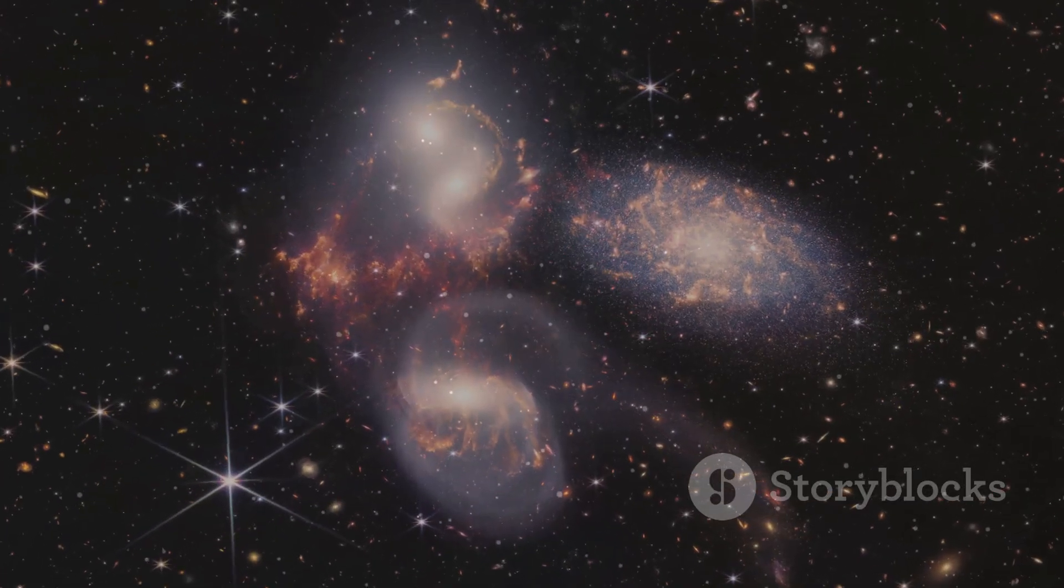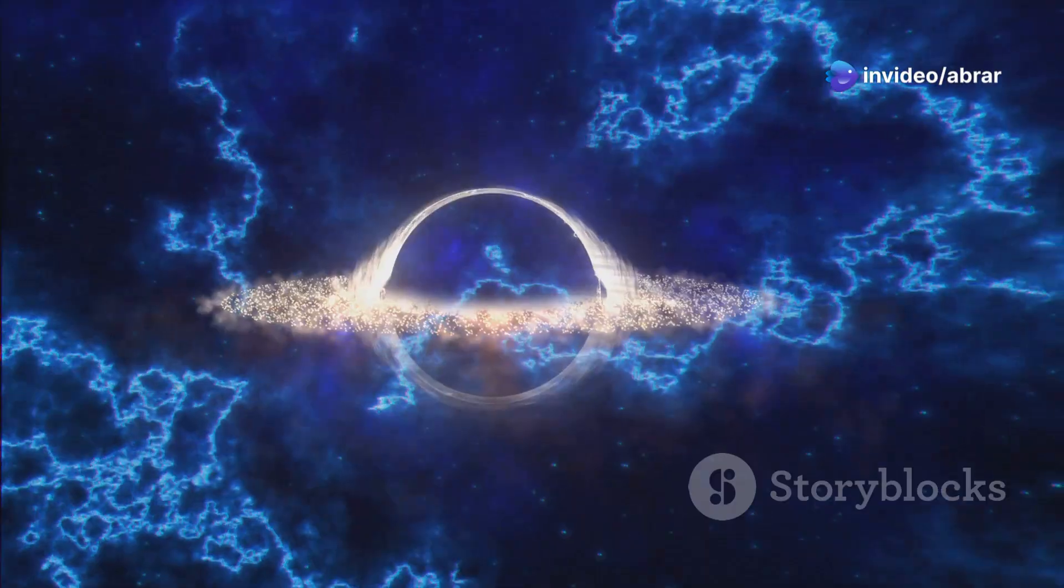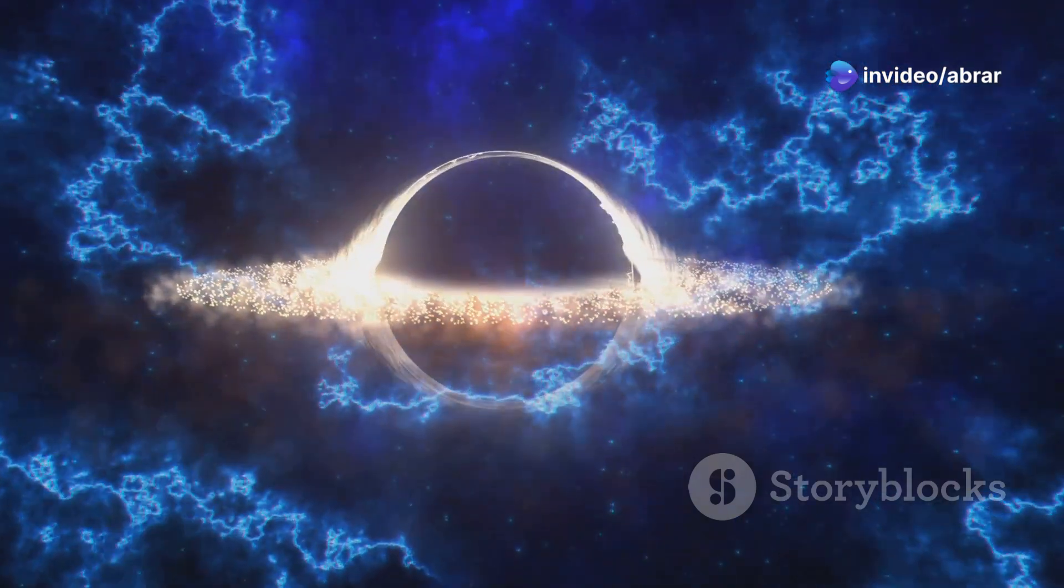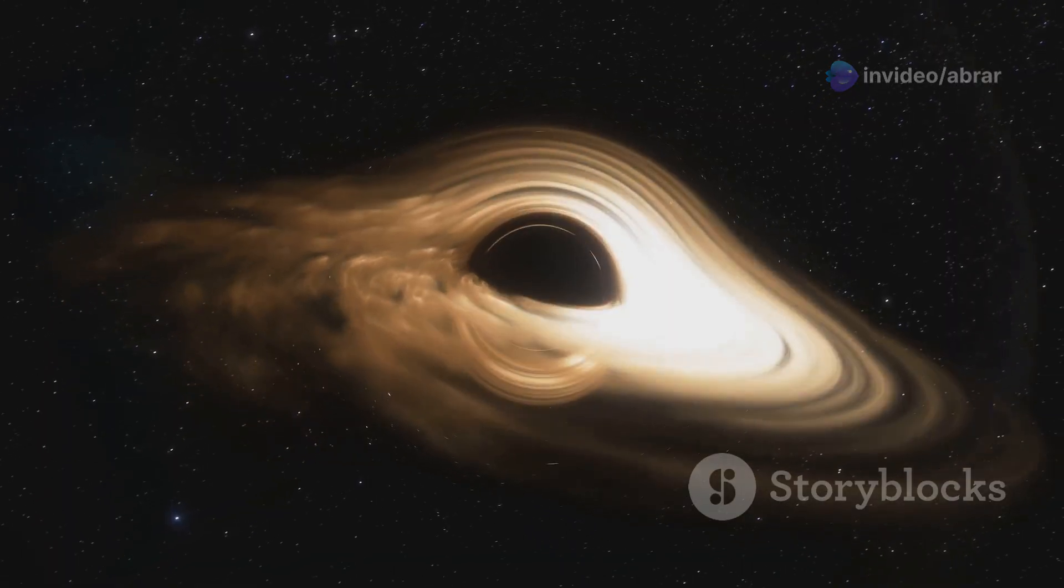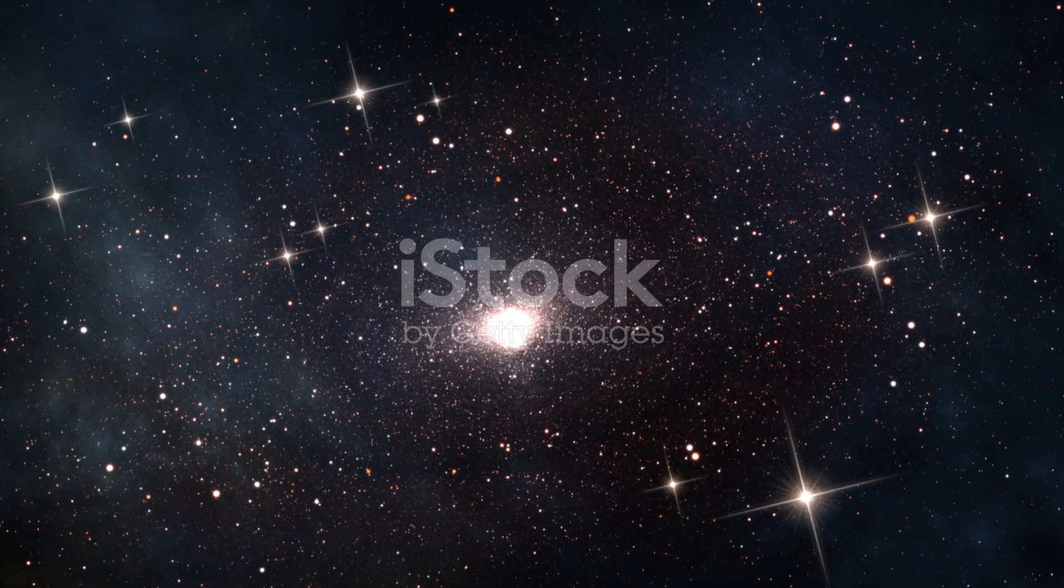They spiral closer and closer. As the black holes merge, they release a tremendous amount of energy. This energy heats up the surrounding gas and dust, causing it to glow brightly. This glowing region is called an accretion disk. It's the source of a quasar's incredible luminosity.